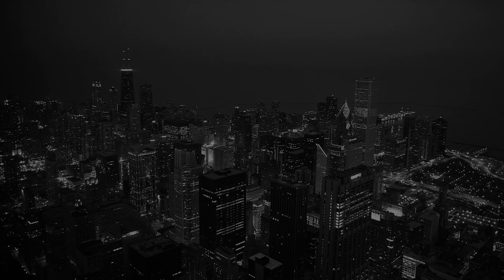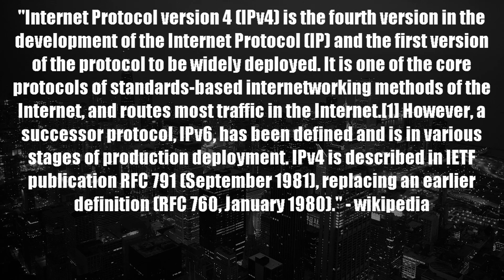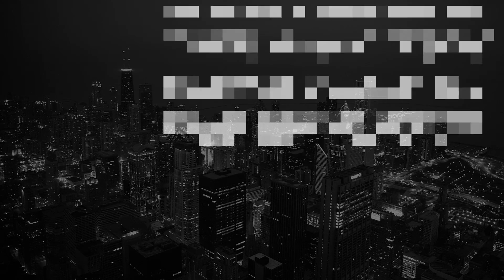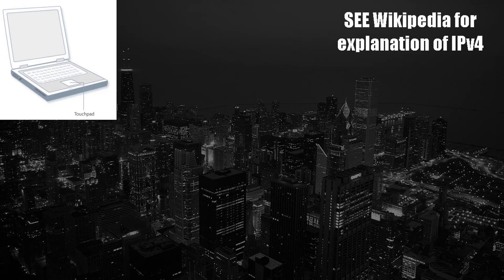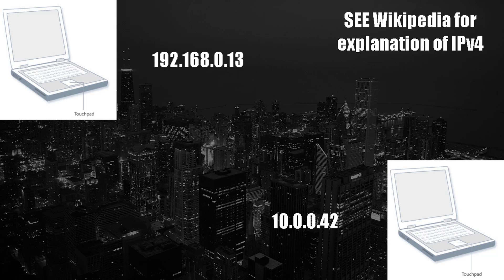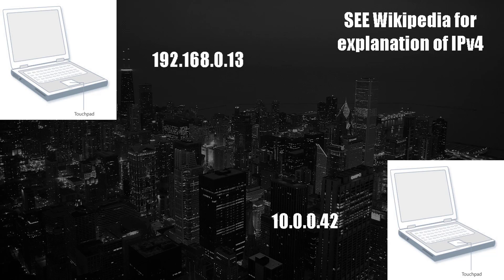The source and destination address on the Internet comes in the form of an IP address, or Internet Protocol address. Most individuals are using IP version 4, while most of the Internet backbone is using IP version 6. If device A has an address of 192.168.0.13 and wants to talk to a device with the address of 10.0.0.42, both sides will need to know the route or path the message needs to take before they can communicate.